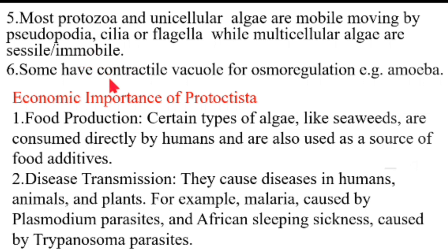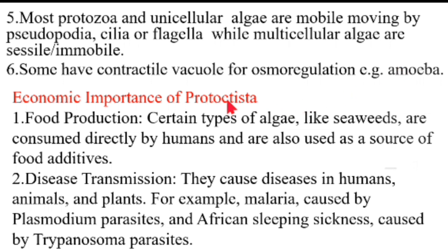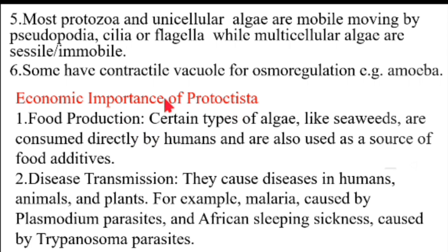Characteristic number six: they have a contractile vacuole, and this is for osmoregulation — that is, they are able to regulate the water content in their body. A good example is Amoeba, which has a contractile vacuole. Note also that other than the contractile vacuole, we also have a food vacuole.